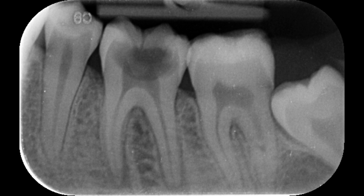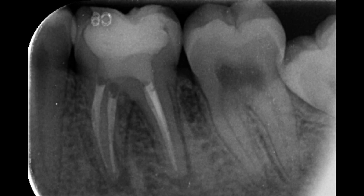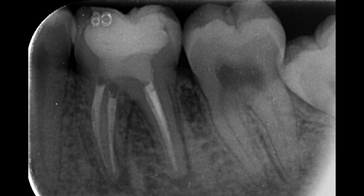After preparation I started the obturation, obturating all four canals. You can see this on the final radiograph. On the distal radiograph you can see the two mesial canals, both ending into two separate foramina. There are also two distal canals in the distal root that end into a single foramen. After obturation, I filled the pulp chamber with flowable 3M composite, and the rest of the cavity was filled with nano-hybrid universal restorative composite.